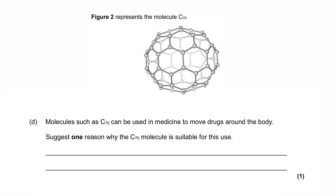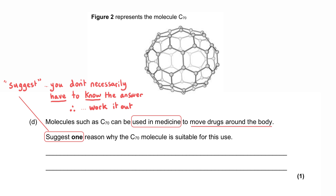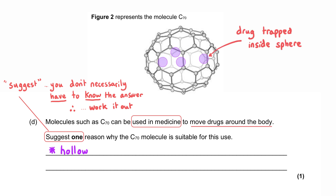Molecules such as C70 can be used in medicine to move drugs around the body. We're asked to suggest one reason why C70 is suitable for this use — only one mark, so give only one reason, as a wrong second reason would invalidate a correct one. One valid answer is that fullerenes are hollow, enabling them to act as a cage and trap the drug inside, releasing it gradually or only at the target area.